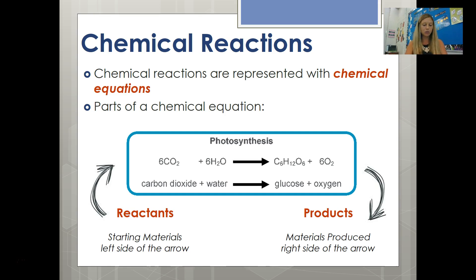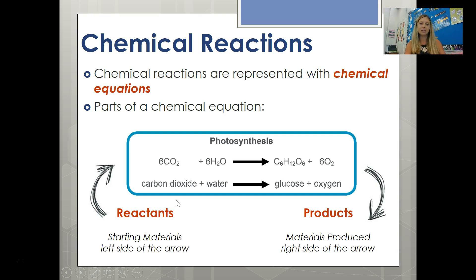Here we have the chemical equation for photosynthesis. Carbon dioxide and water are our reactants — they react together with energy from the sun in order to form, or yield, glucose and oxygen. So glucose and oxygen would be the products.